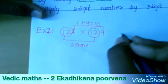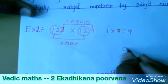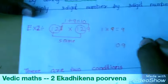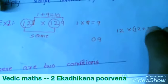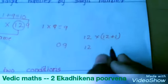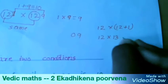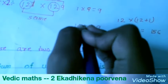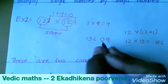We multiply 1 into 9 is equal to 9, so we write 09 here. For the remaining digits, 12, we write 12 here and multiply with 12 plus 1, which is equal to 13. So 12 into 13 is 156 — we write 156 here. The multiplication of 121 into 129 is 15609.